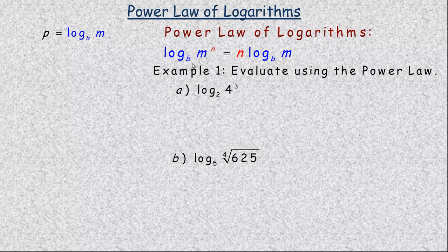The power law says this: if you're taking the logarithm of a power — so m raised to the power of n is the power — then you can rewrite that as n times the same logarithm. So the exponent comes down in front of the logarithm as n, multiplied by the logarithm, without the power.